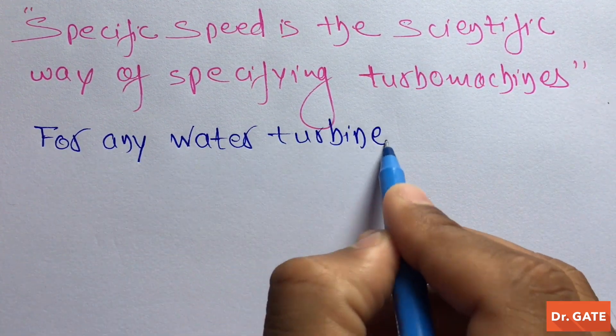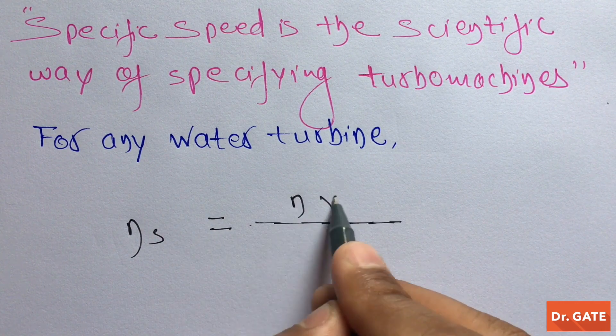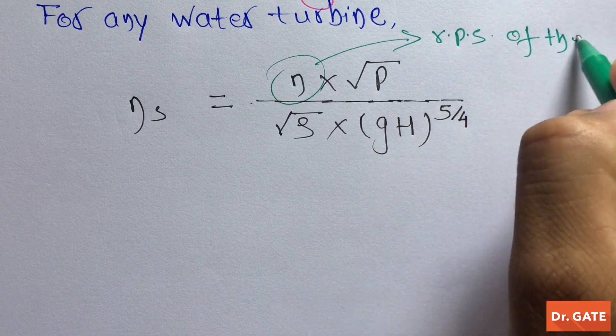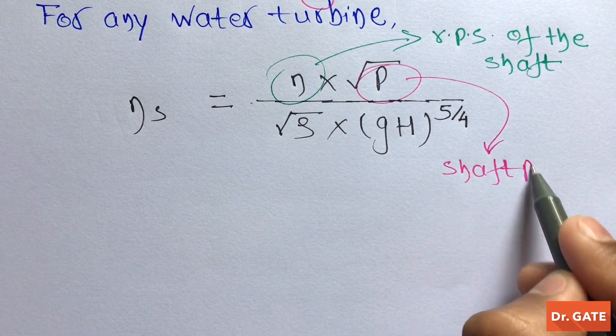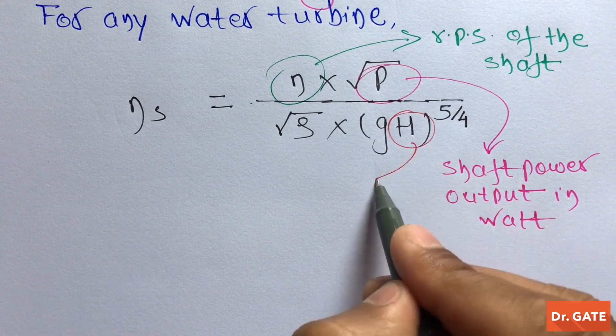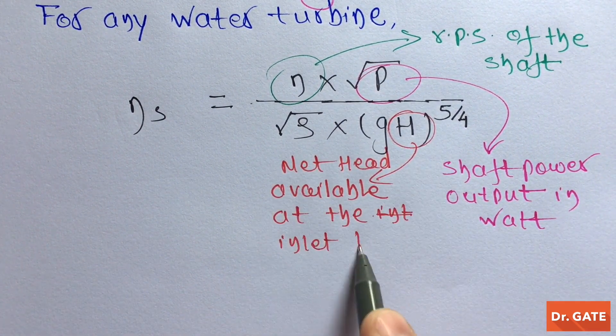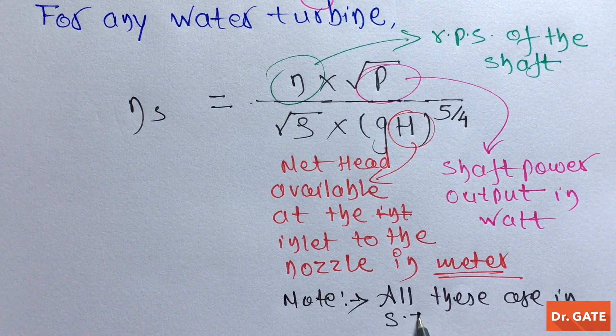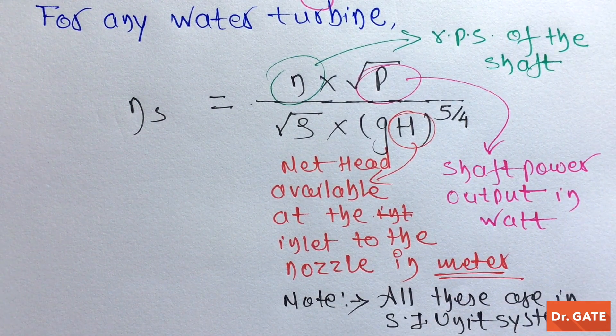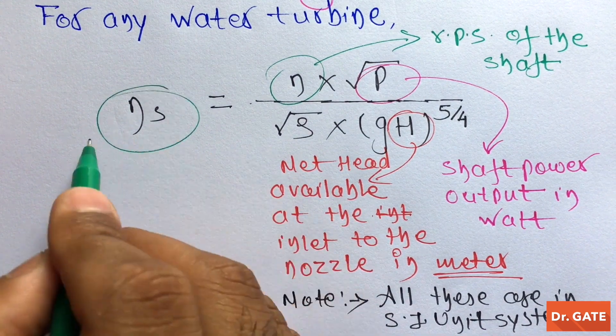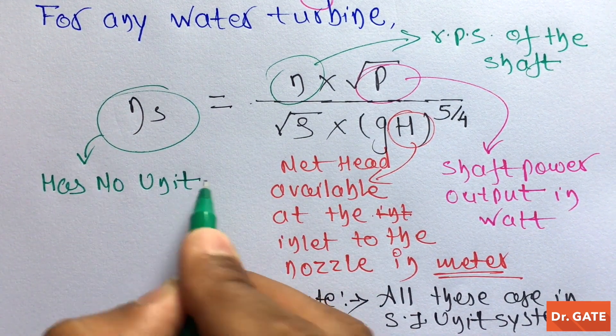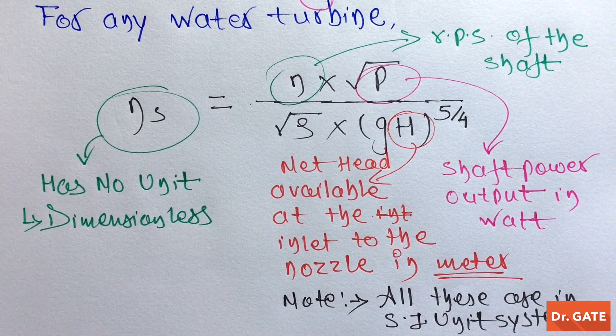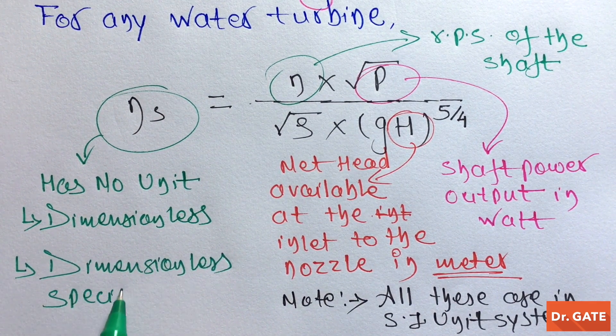For any water turbine, Specific Speed is written as this. Where this is the revolution per second of the shaft, this is the shaft power output in watt, and this one is the net head available at the inlet to the nozzle in meter. One should note that all these are in SI unit system. If you do dimension analysis, you will find that this specific speed has no unit. That is, it is dimensionless. That's why this specific speed is also known as dimensionless specific speed.